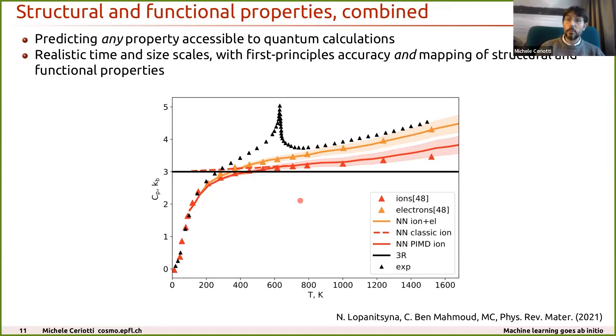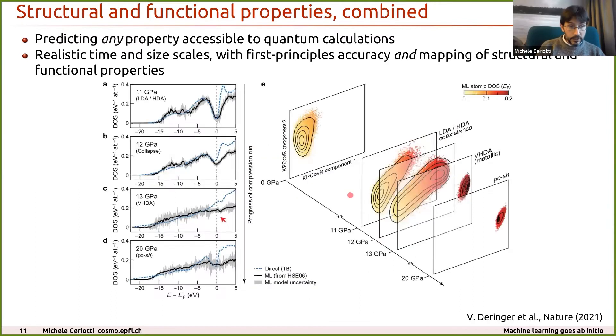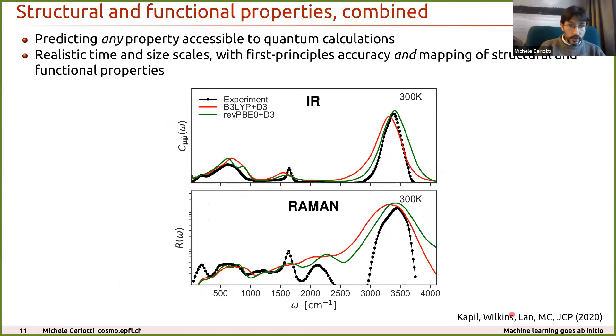Another example, really from the group of Volker Dehringer - one of the nice aspects of machine learning models is that thanks to their atom-centered nature, they scale linearly with system size, which means you can go to hundreds of thousands of atoms and study processes such as phase transitions in amorphous silicon that really require large cells and long simulation times. Another example - you can model spectroscopies. Here, the IR and Raman spectra in water, and you can really put all the physical terms. Here, we are also incorporating the quantum dynamics of the nuclei that determines a substantial redshift of the stretching peaks.